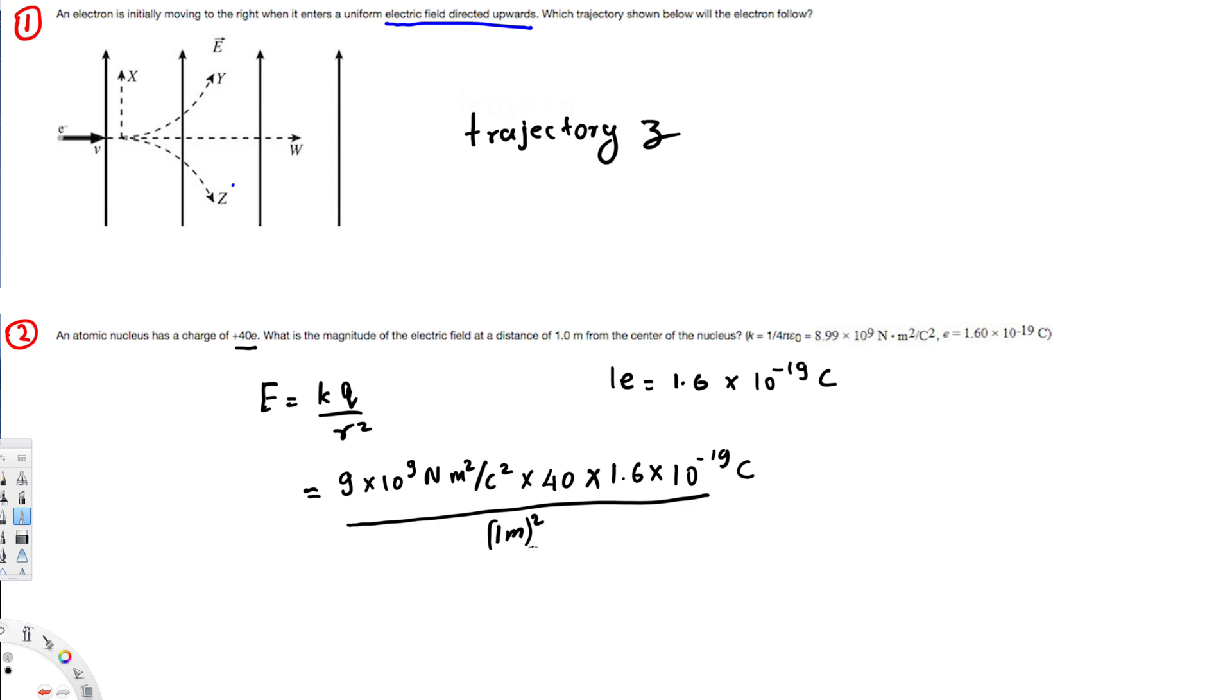That's going to give us the final electric field value. And if you calculate this one, you will get 5.76 times 10 to the power of minus 8 newton per coulomb, and that is the answer for this question. I hope you guys like this video, see you next time.